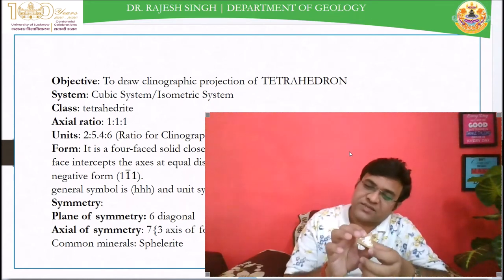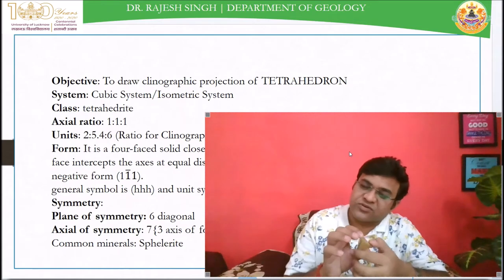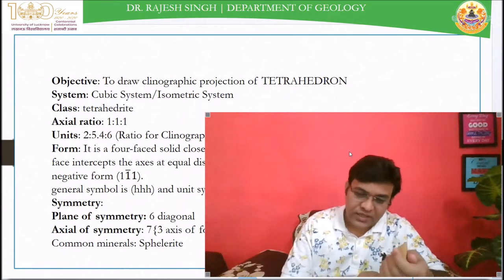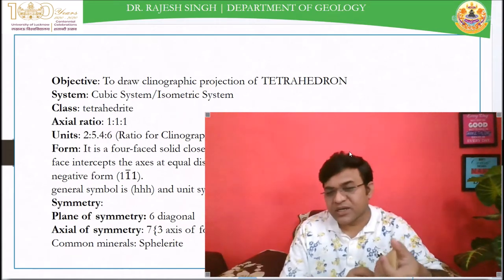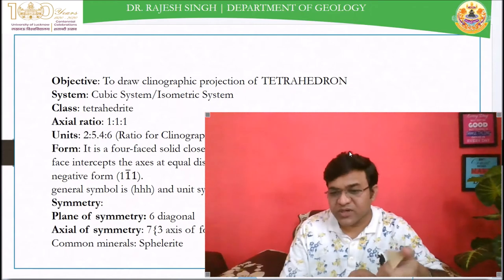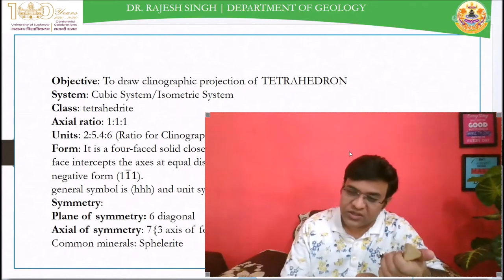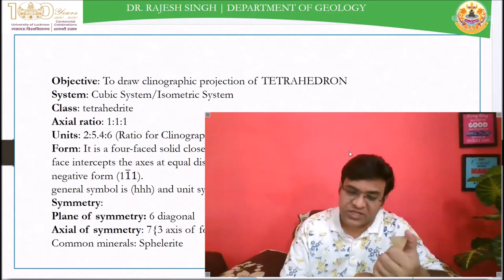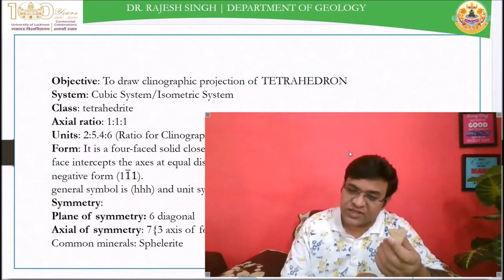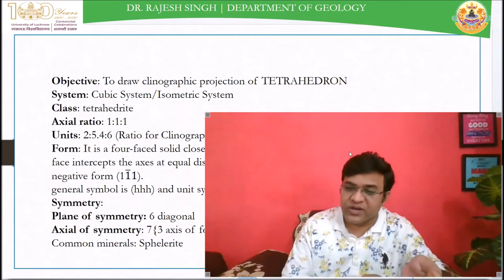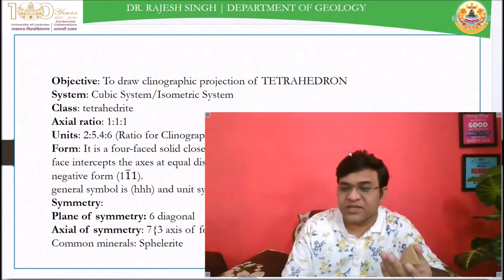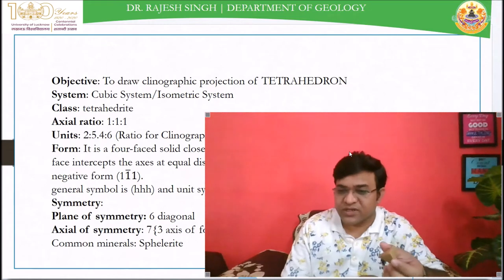The Miller indices will be similar to the octahedron. Like in the octahedron you get 111, here you can get 111. The positive tetrahedron is considered as 111, and 1̄1̄1̄ is considered as the negative tetrahedron.